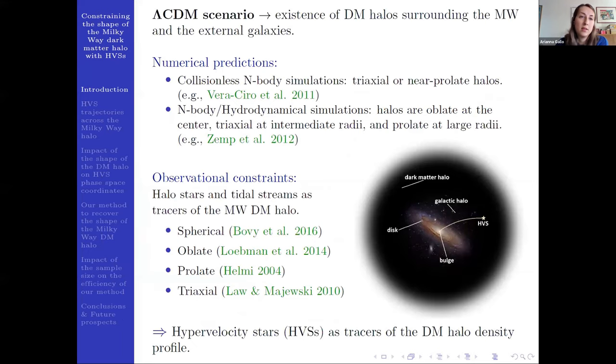We know that the Lambda cold dark matter scenario predicts the existence of dark matter halos surrounding the Milky Way and other external galaxies. From collisionless N-body simulations, we have that the dark matter halo is predicted to be triaxial or near prolate.